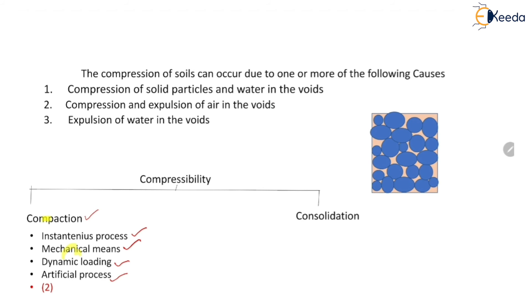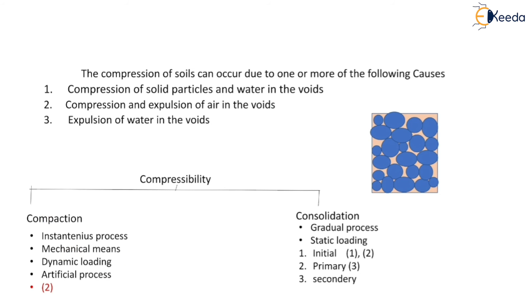Compaction is an instantaneous process and it does not last over a long period like months and years. One more difference: compaction is done before the construction of the structure to improve the engineering properties of soil by an artificial process, whereas consolidation takes place after the construction of the structure and occurs naturally.